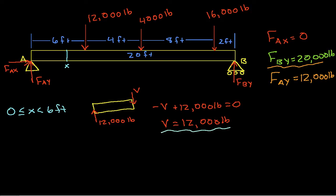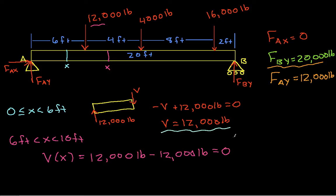If we look at the case where X is between 6 feet and 10 feet, V will just be the sum of the forces from the left, or the vertical forces from the left side up to point X. In this case, we'll have V(X) equal to F_AY, which is 12,000 pounds, minus 12,000 pounds, and that's equal to 0. Between 6 feet and 10 feet, the shear force internal to this beam is 0.